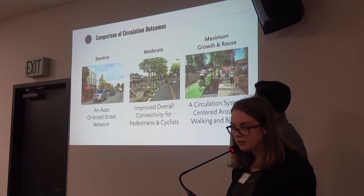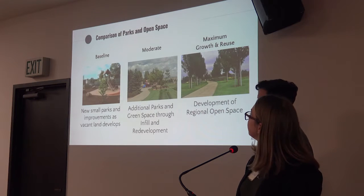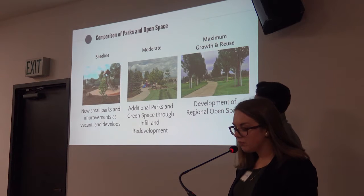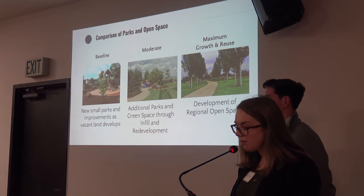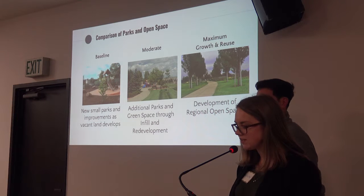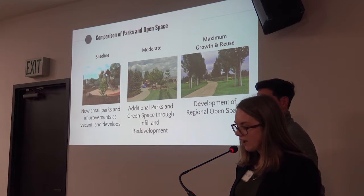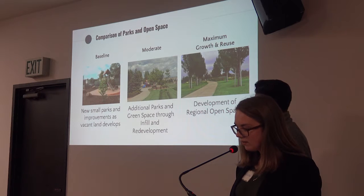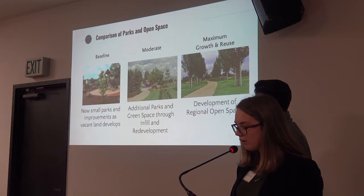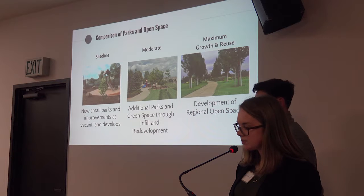The maximum growth alternative includes enhanced access to the beach, western, and southern portions of Oceano. Comparing parks and open space outcomes, the baseline growth alternative adds new small parks as vacant land develops in the central and southern parts of Oceano. The moderate growth alternative adds parks and green space in close proximity to the central, southern, and industrial neighborhoods. The maximum growth and reuse alternative envisions redevelopment of the airport area, resulting in a significant amount of regional and neighborhood-serving open space.